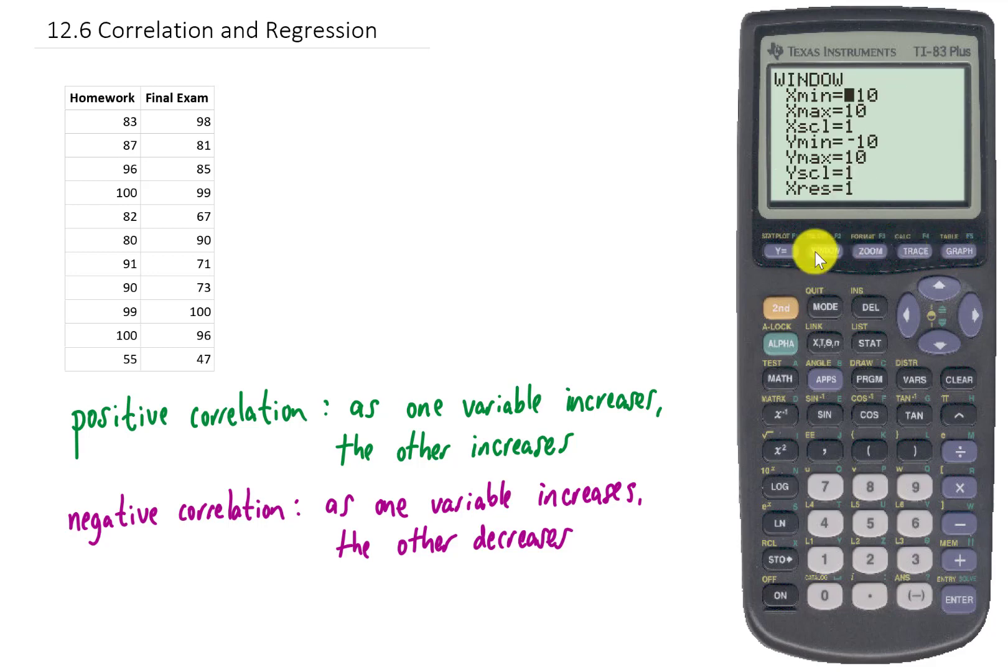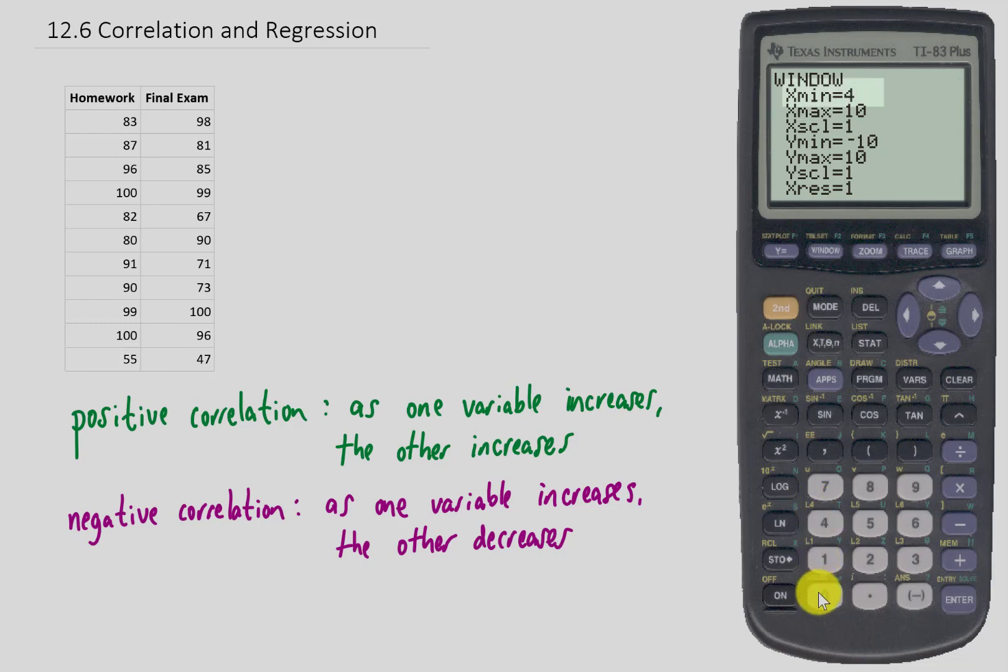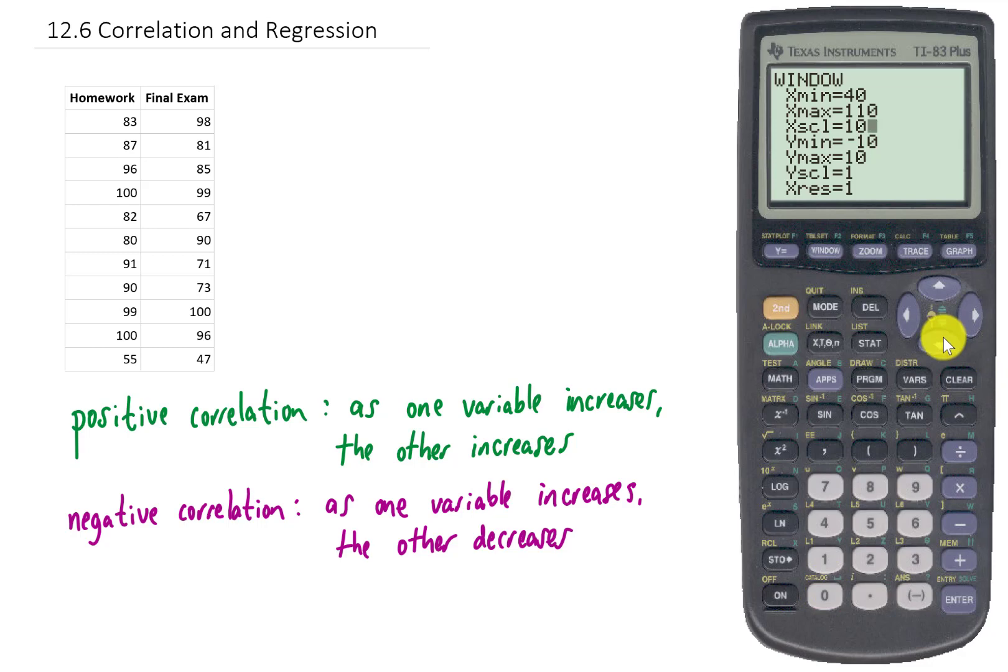So I'm going to click Window. My smallest X value is 55, so maybe I'll just start my X values at 40. And my largest X value is going to be 100. So maybe so I can see everything, I'll make my largest X value 110. My scale on my X axis, maybe I'll make it 10 per tick mark. And I'll do the same thing for my Y values.